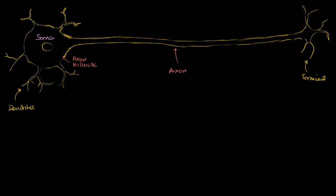Now that we know how a signal can spread through a neuron — through electrotonic potentials, action potentials, and combinations of the two — let's put it all together by looking again at the structure of a neuron, the anatomy of a neuron, and thinking about why it has that anatomy and how it all works.